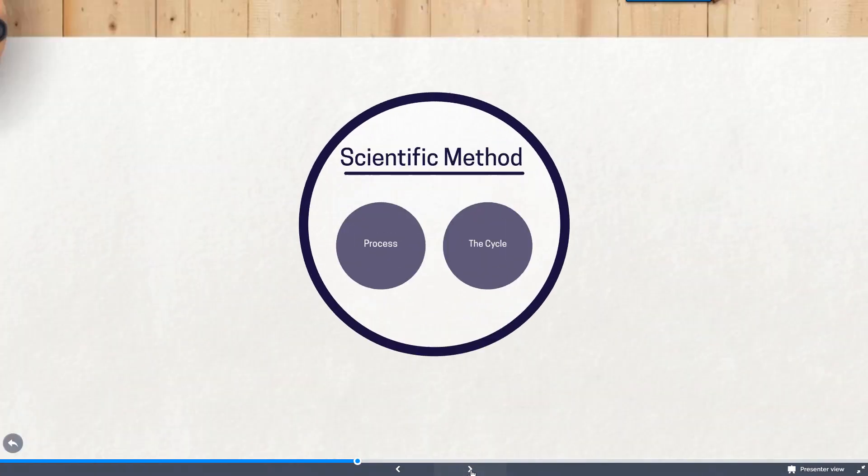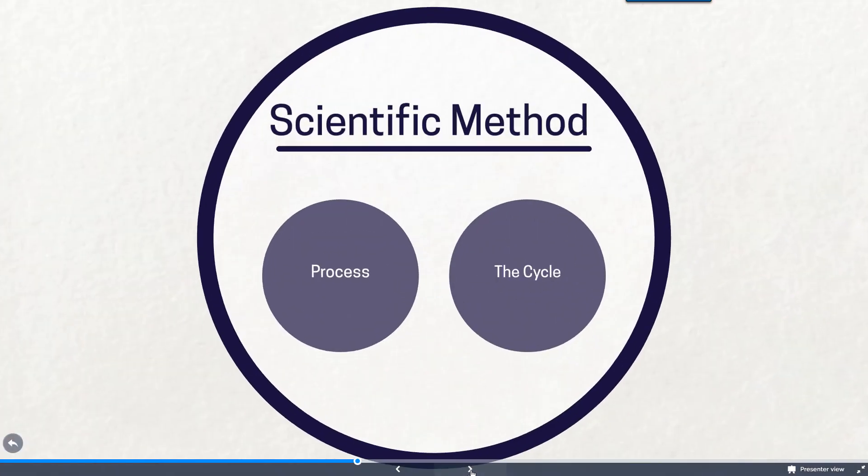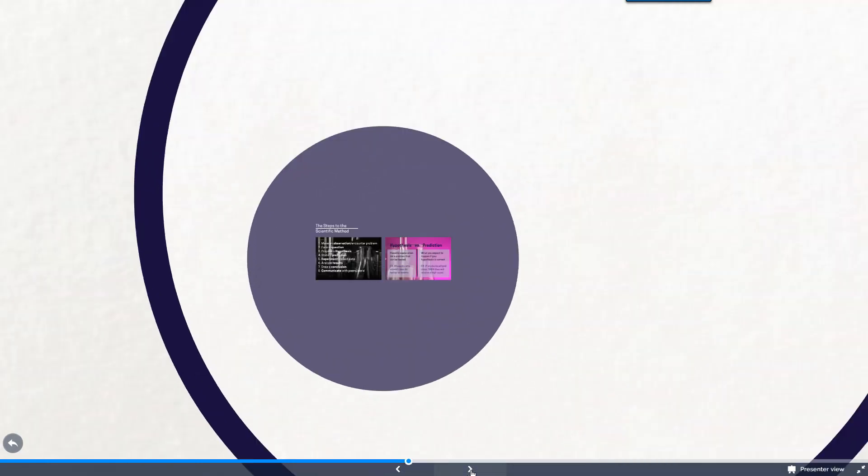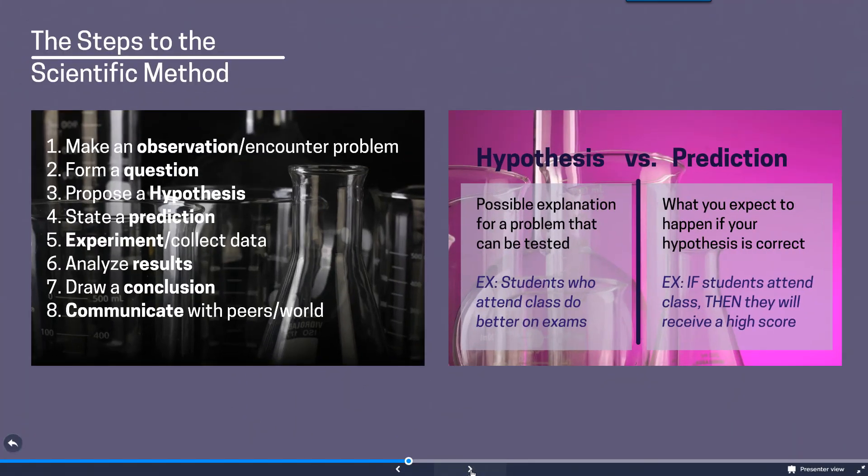Now if we take a look a little bit closer at the scientific method, we find that there's a general process that scientists follow and we also find that it tends to be quite cyclical in nature. So in looking at the process we first want to take a look at the steps that are involved within the scientific method and then the difference between a hypothesis and prediction.